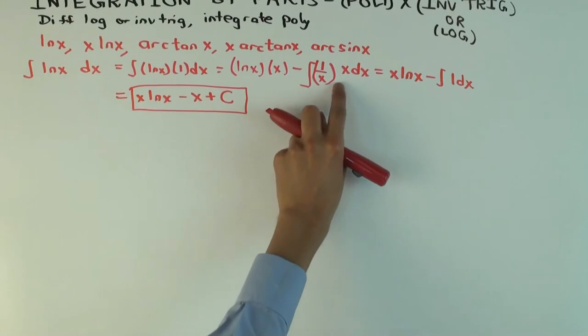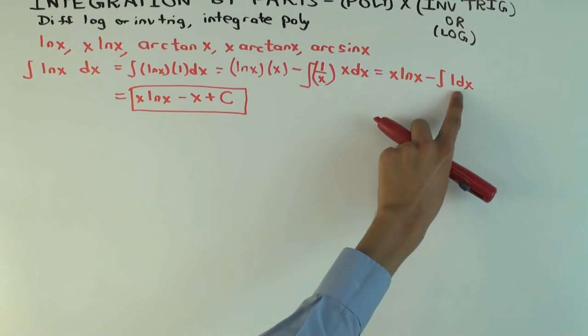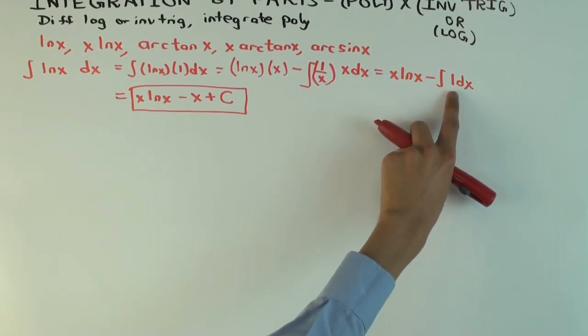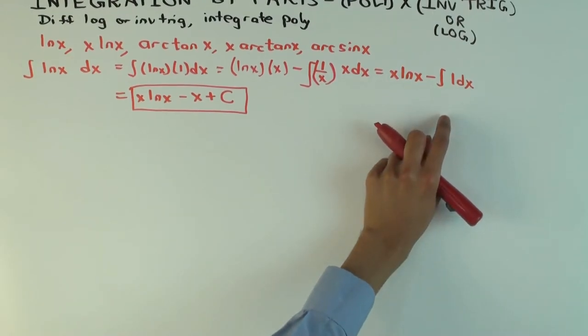So that becomes x ln x minus x plus C. So notice what happened here, at this stage, once I differentiate the logarithm, this new integral is a purely algebraic integral. In fact, in this case, it's a purely polynomial integral. So far, so good.